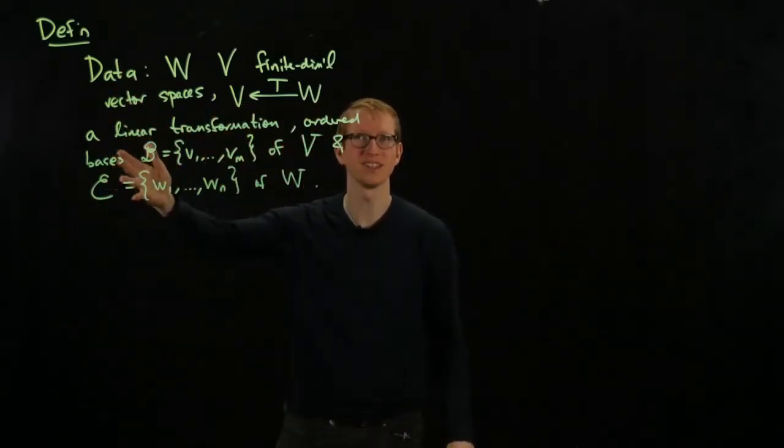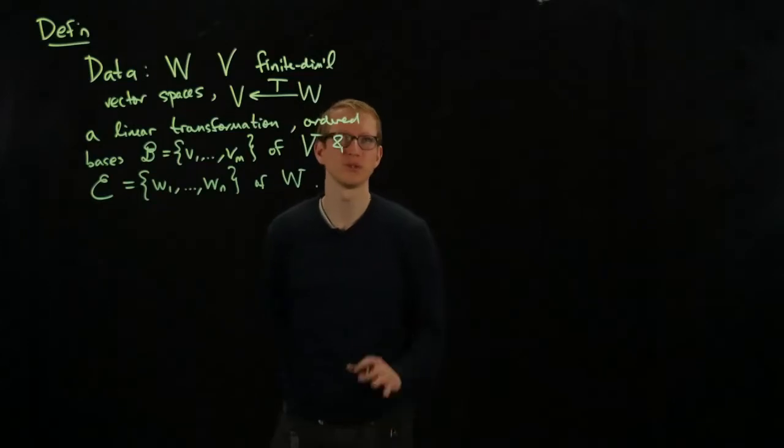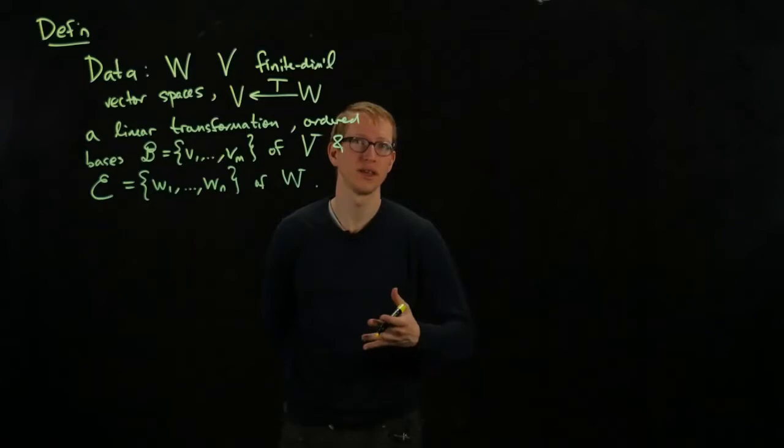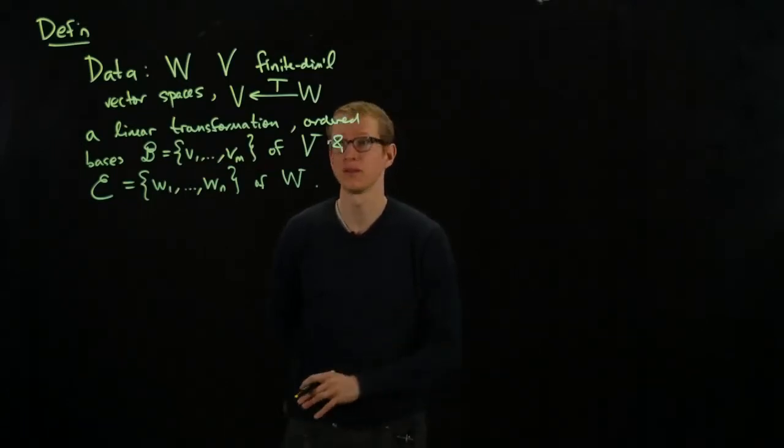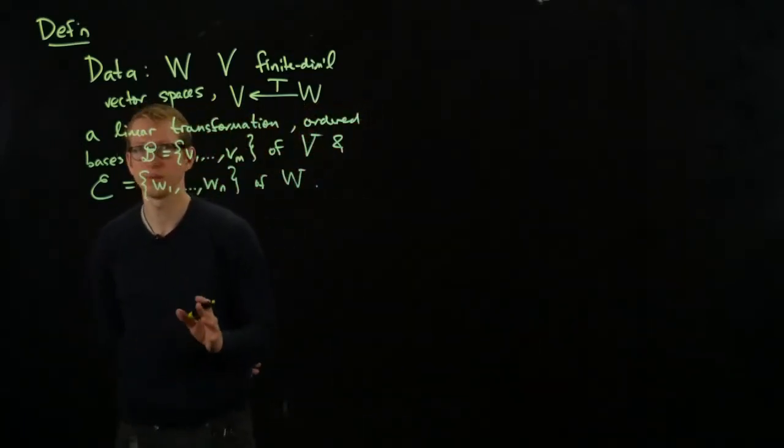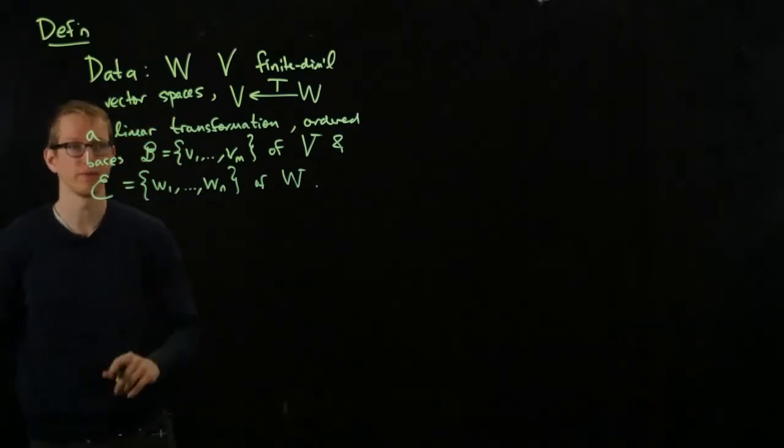And this is all of the data that we need. You can already see that this is a lot of information, which is why we typically don't like keeping track of all of this to write a Jacobian. Instead, we just have the differential, and we have a linear transformation associated to it. We don't necessarily care about what the basis, or what a basis could be.